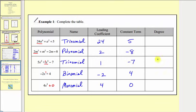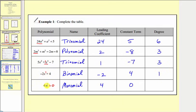Finally, we find the degree — the highest exponent on the variable in the polynomial. The highest exponent on a is six, so the first is a degree six polynomial. The highest exponent on m is three, giving a degree three polynomial. The highest exponent on x is three in the next, so another degree three polynomial. The highest exponent on x is one in the binomial, so it's a degree one polynomial. And for the monomial, the highest exponent on x is three, giving a degree three polynomial.